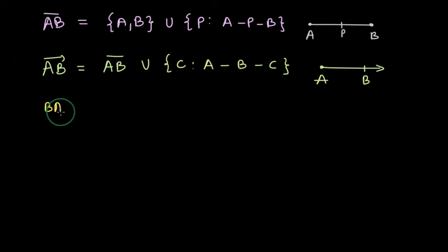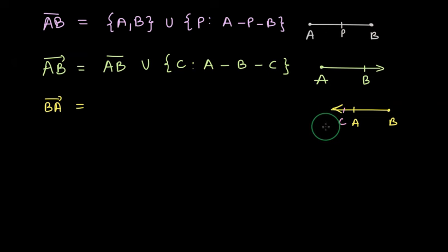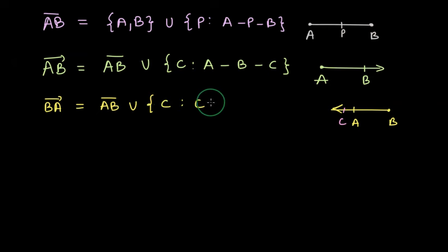Now what about ray BA? B will be the terminal point. This ray BA looks like: B is the terminal point and A is the other point. We will have some point C after A to the left, and A is between B and C now. So the set notation for ray BA is: segment AB union some point C such that point A is between C and B.